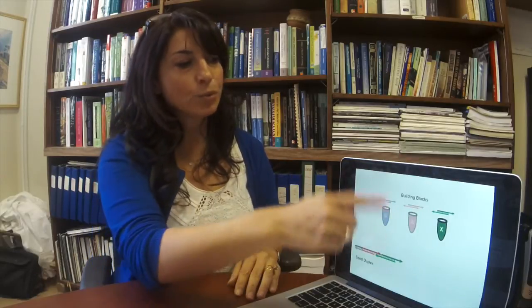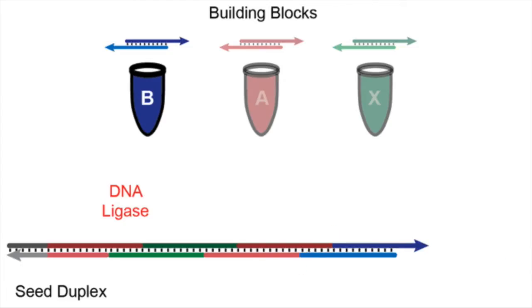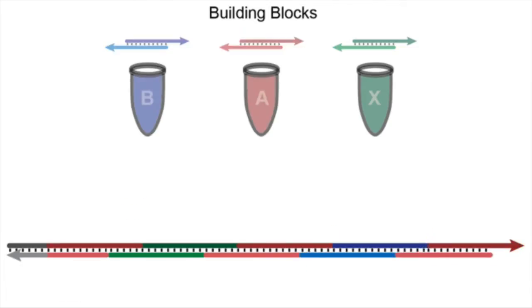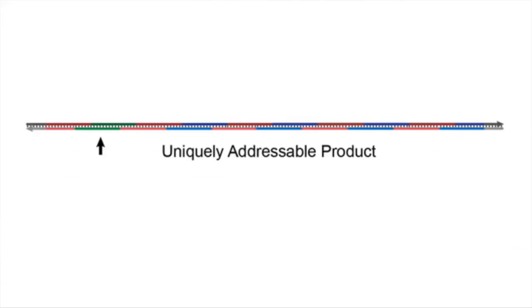We can add repeating strands, repeating building blocks, so you can have A, B, A, B, etc. Or you can add a third or fourth building block to make it even more complex. It depends on the application and depends on what you want to do.